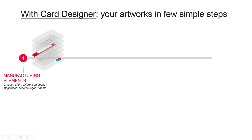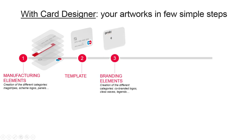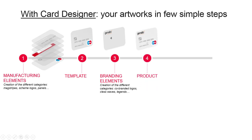Describing the artwork with the following features. Step two: once all the categories are created and populated using the wizard, you can design your generic template by selecting your chosen manufacturing elements. At this stage, we progress to step three, where you can complete the generic template by adding any branding elements from this category, such as co-branded logos, etc.